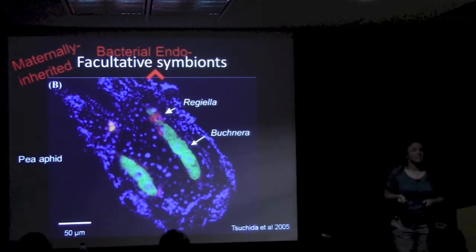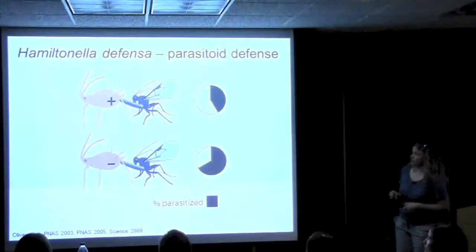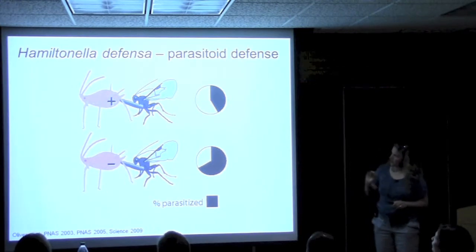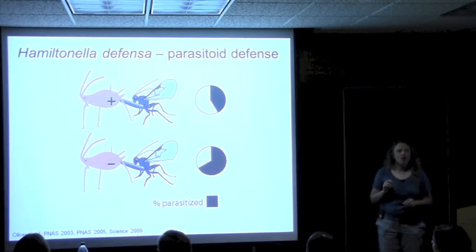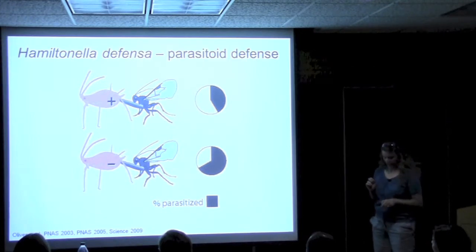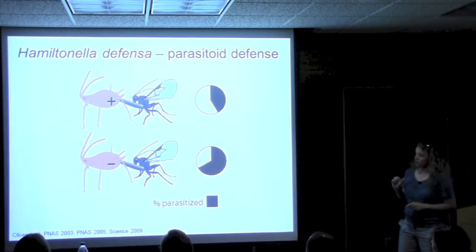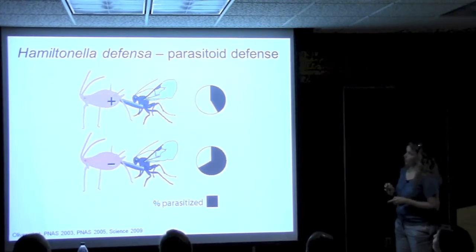For a long time we really didn't know what these facultative symbionts were doing. But it turns out they're doing some really fascinating things. I took a bunch of these diagrams from a fairly recent review by Kerry Oliver et al. in Annual Reviews — an excellent overview of facultative symbionts, particularly within aphids, which is one of our best-known groups as far as these sorts of symbionts go.